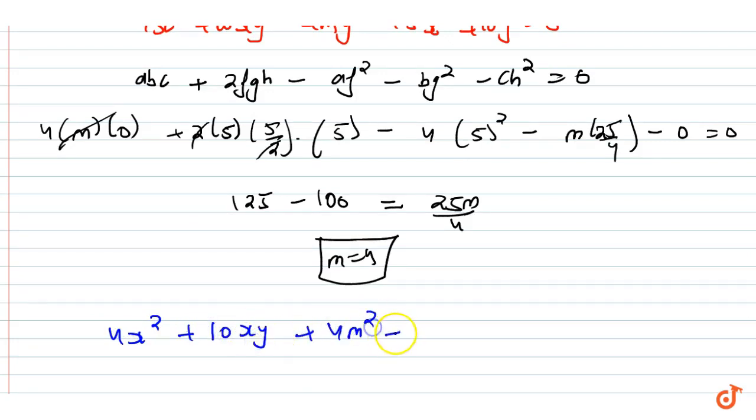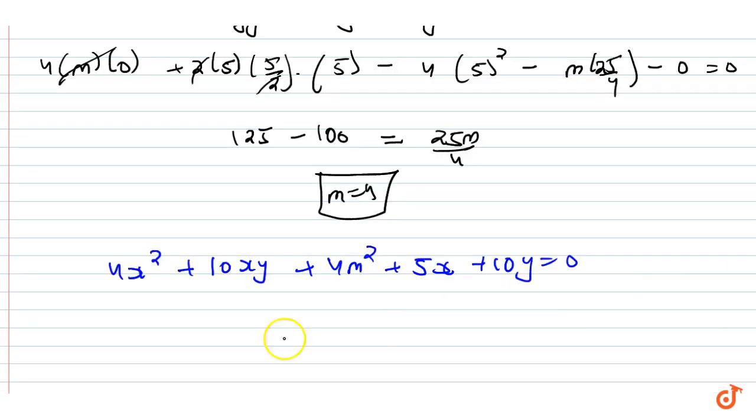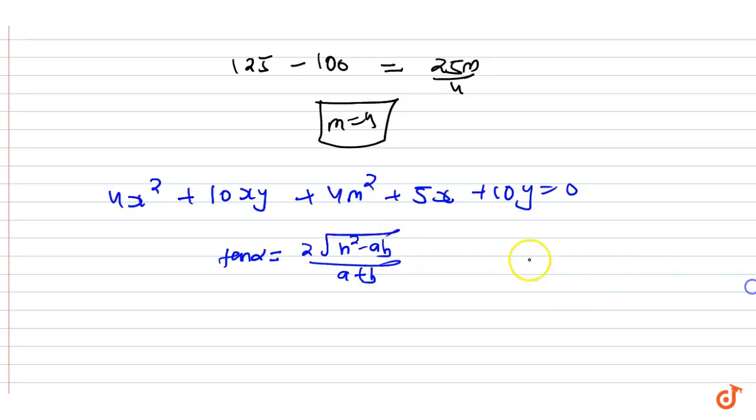Now we have 4x² + 10xy + 4y² + 5x + 10y = 0. The formula is: tan α = 2√(h² - ab)/(a + b), where a is 4, b is 4, and h is 5.